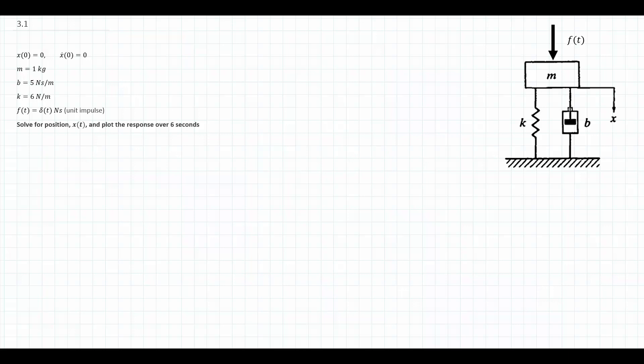What's happening in this problem is we're starting at rest or at equilibrium, and as soon as we start our timer at time zero, we're basically hitting it with a hammer — giving it a very quick impulse. Then we're going to see that the mass is going to move based on that impulse, oscillating or moving on its own from that impulse.